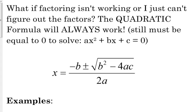Here is the quadratic formula: x equals negative b. This is not always going to be negative — it means you change the sign of b. If b was positive in your equation, it will be negative in the formula; if b was negative, it becomes positive. Then we add and subtract the square root of b squared minus 4 times a times c, all over 2 times a.